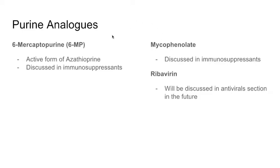The first class is the purine analogs. 6-mercaptopurine is the active form of azathioprine, discussed in immunosuppressants. The idea is 6-mercaptopurine goes into the DNA and attaches to the growing strand, but when DNA polymerase comes in it can't add any more nucleotides. So it stops DNA polymerase. That's the concept behind any analog. Mycophenolate and ribavirin will be discussed in their respective sections.